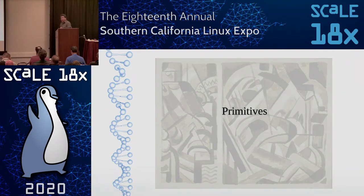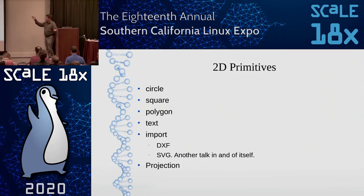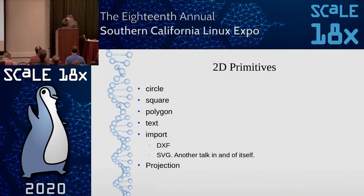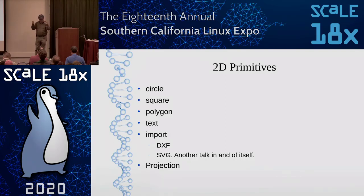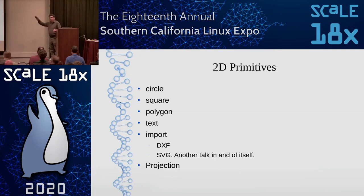Primitives. You're building Constructive Solid Geometry by combining primitives. In 2D primitives you have: circle, square, polygon (where you give individual points), text, and import—where you can import a DXF or an SVG. SVGs can be very handy with Inkscape. You can bring a logo into OpenSCAD, clean it up in Inkscape, bring it into OpenSCAD, and print it out at different sizes. Then projection—the keyword to take your 3D things and turn them into a 2D object. I haven't used that much yet, but if you need to go from 3D down to a 2D representation, look up projection.